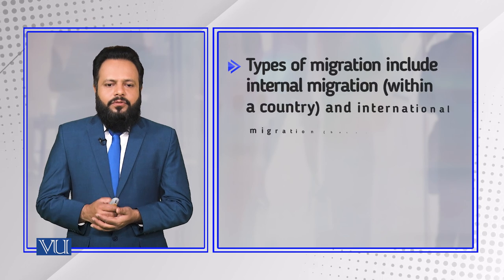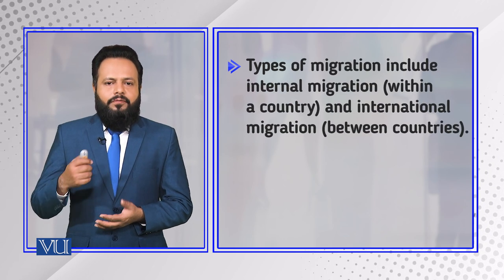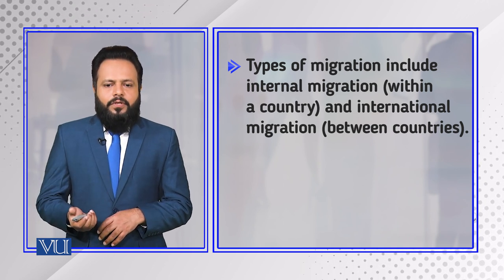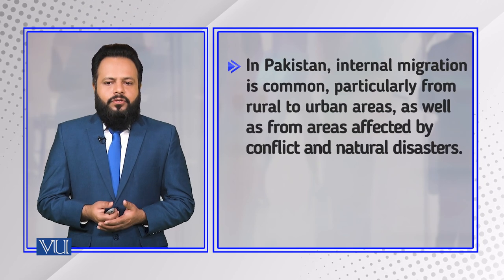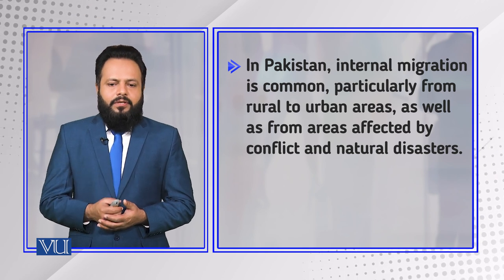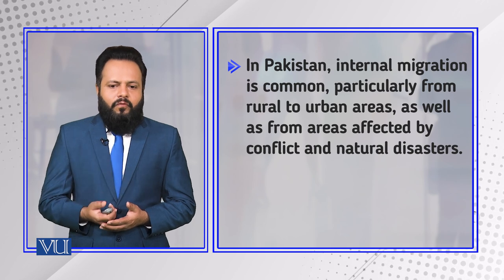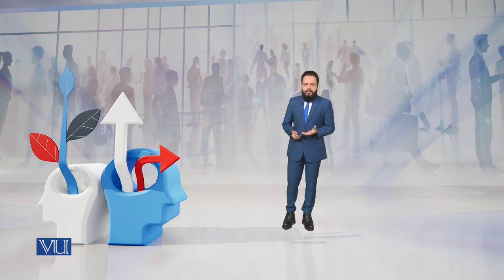The types of migration include internal migration, that is within the country, and international migration, which is between countries. In Pakistan, internal migration is common, particularly from rural to urban areas, as well as from areas affected by conflict and natural disasters.